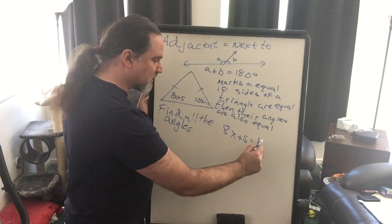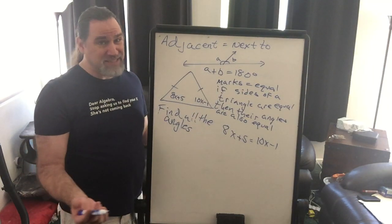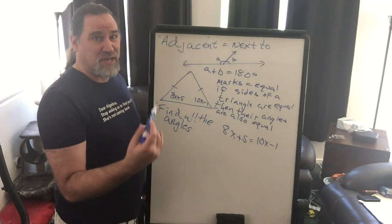So when two things are equal, all you have to do is put an equal sign between them, and now you're in a position to find what X is. X is not our angle. X is the number that's going to let us find our angle. So let's do that.